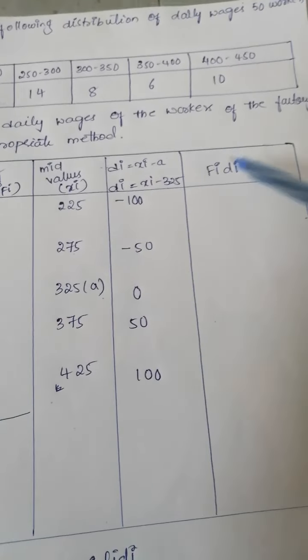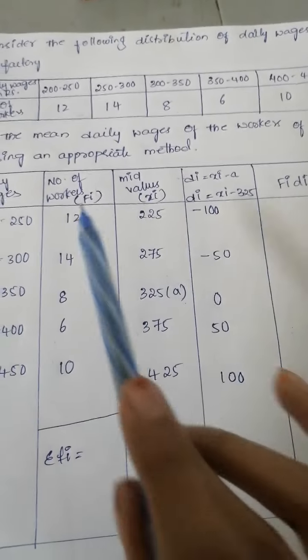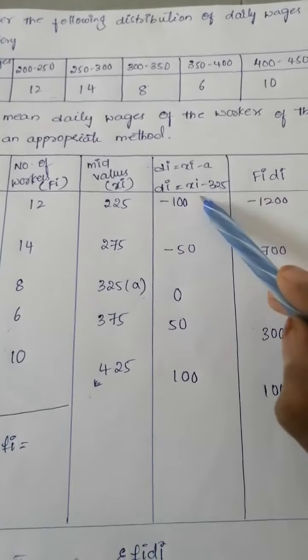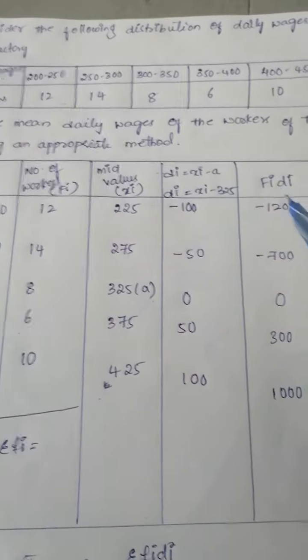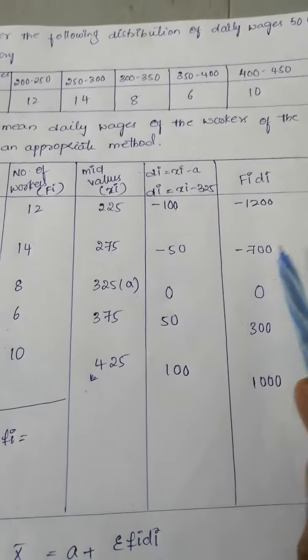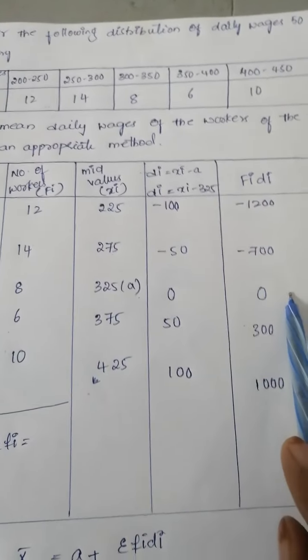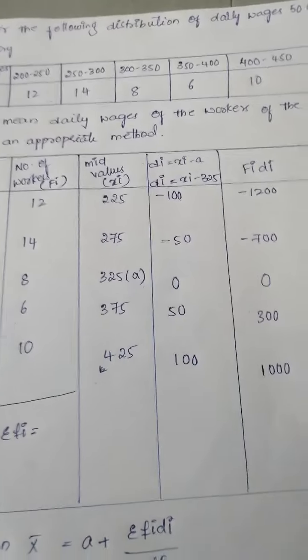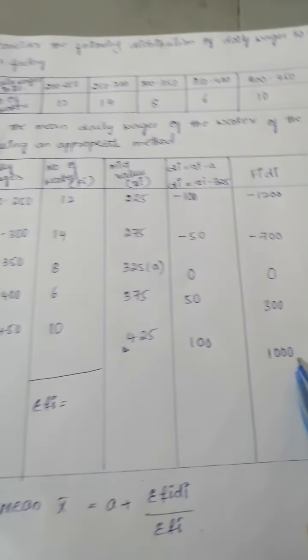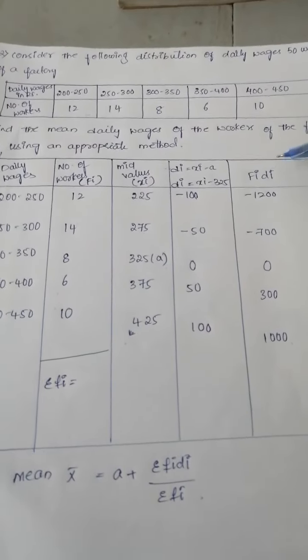Next, Fi into Di. We multiply the frequency by Di. 12 into minus 100, plus into minus is minus, 12 into 100, 1200, so minus 1200. 14 into minus 50, minus 700. 8 into 0, answer is 0. Something into 0 is 0. 6 into 50, 300. 10 into 100, 1000. We have found all values: Fi value, Xi value, Di value, and Fi into Di value.